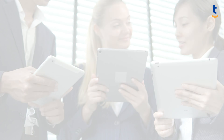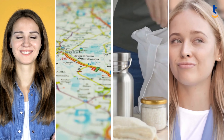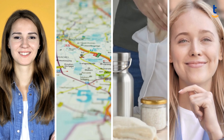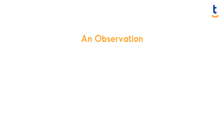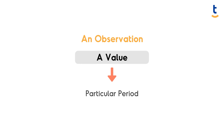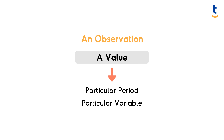A variable is an attribute that describes a person, place, thing, or idea. The value of the variable can vary from entity to entity. An observation, on the other hand, is a value at a particular period of a particular variable.